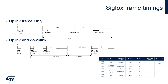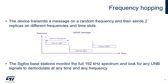TX periods depend on the number of bytes sent and on the RC zone. It takes 10 ms to send a bit in RC1 and RC3. It takes 1.66 ms to send a bit in RC2 and RC4. A message can be 26 bytes long at the most, including sync word, header, and payload data. Therefore, for RC1, a TX period can be maximum 26 × 8 × 10 ms = 2.08 seconds. The device transmits a message on a random frequency and then sends two replicas on different frequencies and time slots. The Sigfox base stations monitor the full 192 kHz spectrum and look for any ultra-narrow band signals to demodulate at any time and any frequency.